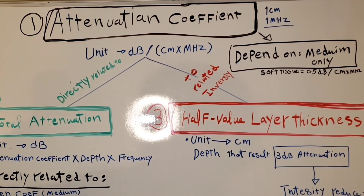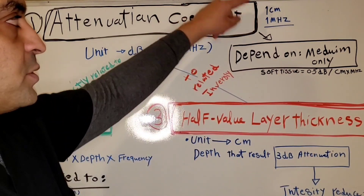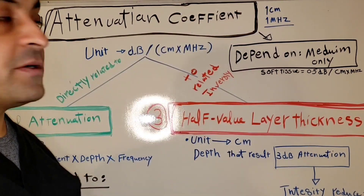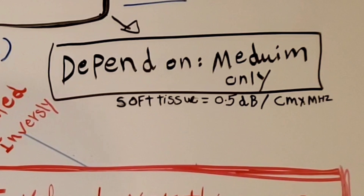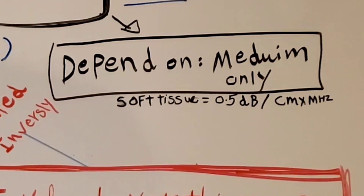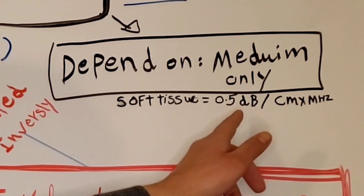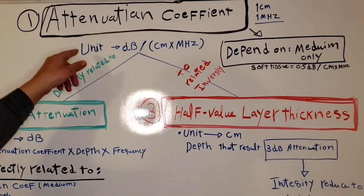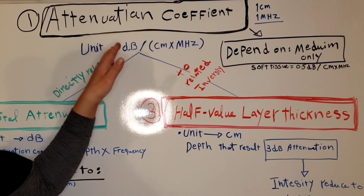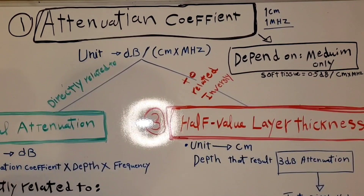Let's start with the attenuation coefficient. The attenuation coefficient is the amount of attenuation when the frequency is one megahertz and the sound beam travels one centimeter in depth. It depends only on the medium — every medium has its own attenuation coefficient. For example, soft tissue equals 0.5 decibels per centimeter per megahertz.